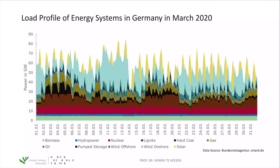You can see different patterns of energy production: baseload systems like nuclear, hydropower, and biomass run at a more or less constant level. Lignite, shown in brown, operates between baseload and medium load with slight changes in output. Hard coal, shown in black, and gas turbines, shown in dark yellow, vary their energy generation according to demand — ranging from nearly 12 gigawatts down to just one or two gigawatts — making these systems very flexible.